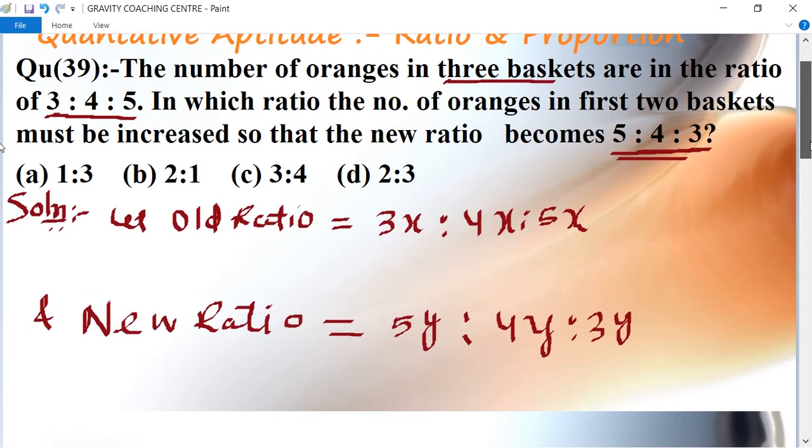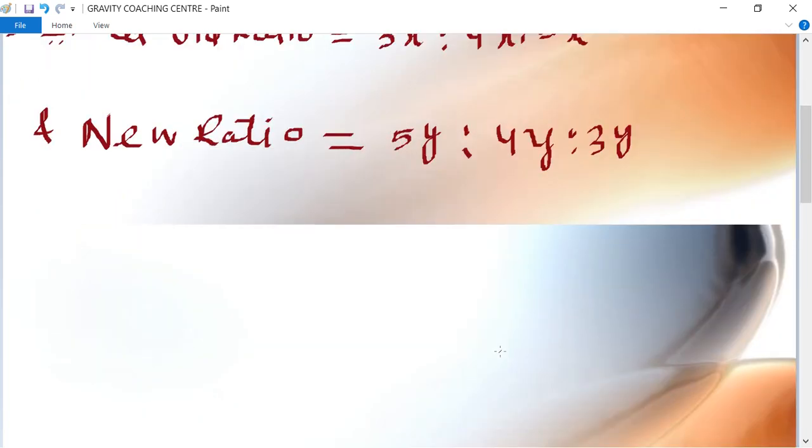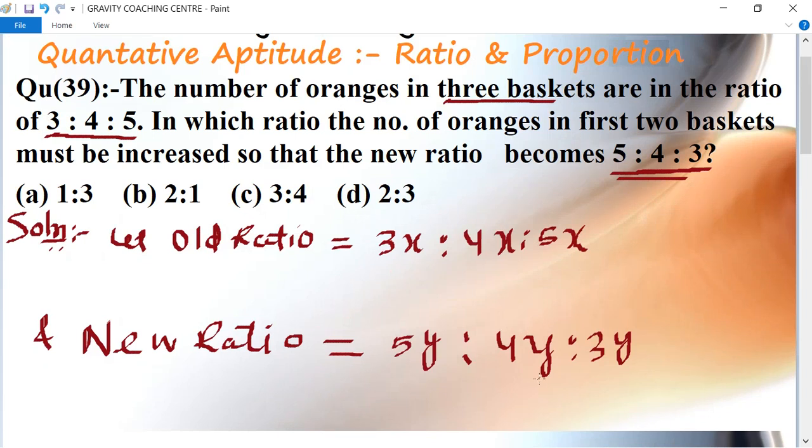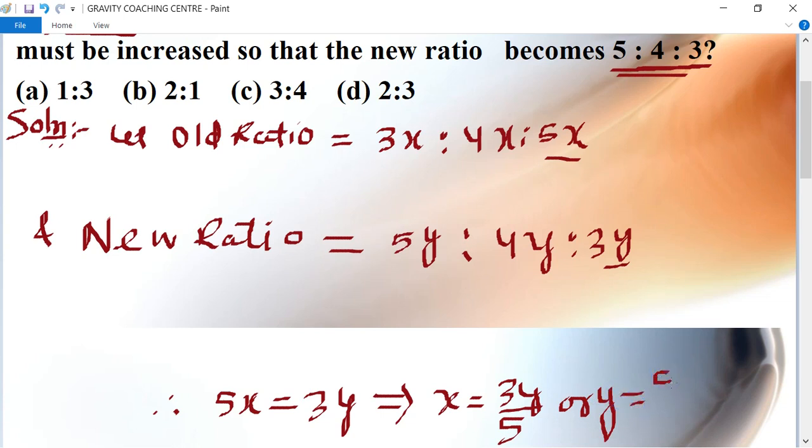According to the question, the number of oranges remain constant in the third basket, means 5x equal to 3y. Therefore 5x equal to 3y implies that x equal to 3y upon 5, or y equal to 5x upon 3.